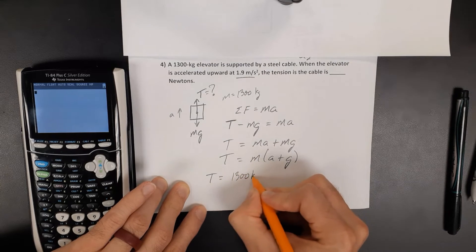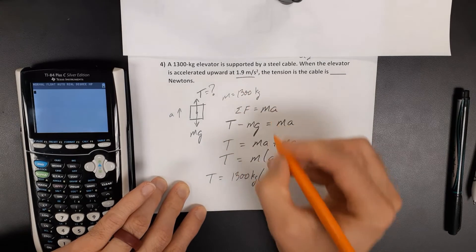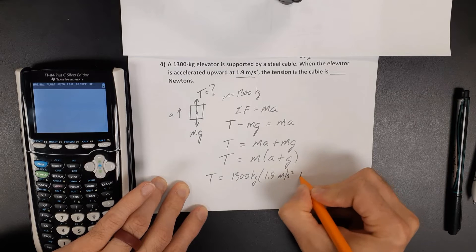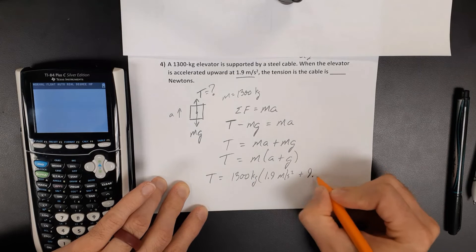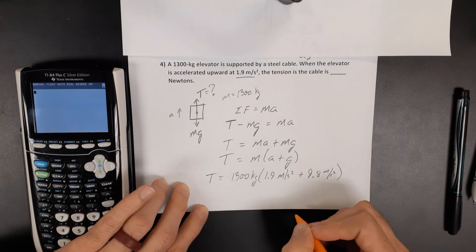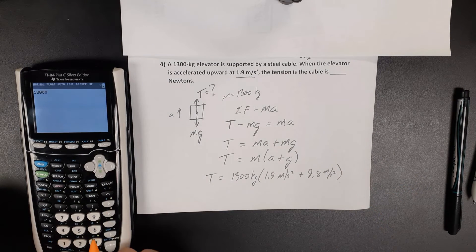We want to take our mass, 1,300 kilograms, times our acceleration, 1.9 meters per second squared, plus the acceleration due to gravity, 9.8 meters per second squared. If I enter that in my calculator,